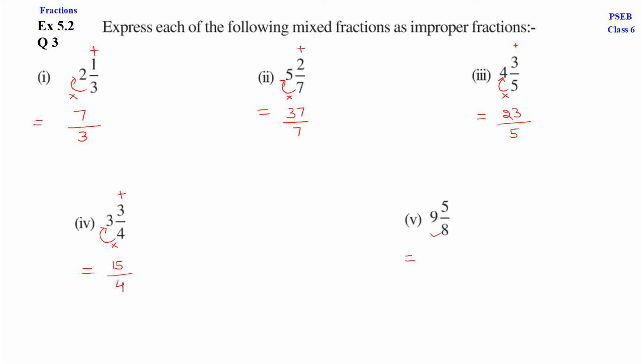Fifth part. 9 into 8. Add 5. So, 9 into 8 is 72 plus 5 is 77. So, here again numerator. Upon denominator is same. So, this is 77 upon 8.